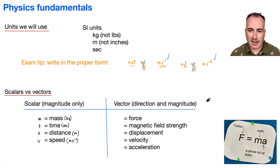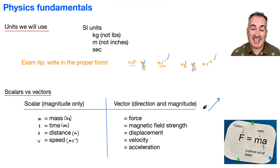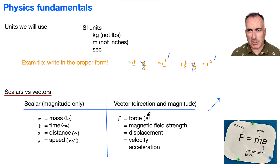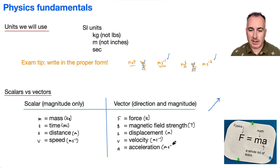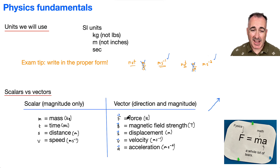Vectors are things I think of as arrows — there's a length, which is the magnitude, and the direction. So for vectors: F is force, measured in newtons, or kilogram meters seconds to the minus two, but we prefer newtons. B is magnetic field strength, measured in teslas. Displacement is written as s with a vector symbol, measured in meters. Velocity v is in meters seconds to the minus one, and acceleration a is in meters seconds to the minus two. For vectors, we often write a little arrow on top to imply it's a vector. In IB exams you don't have to do this, but it's typical notation.